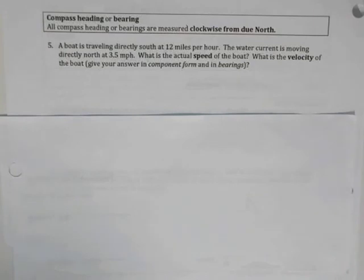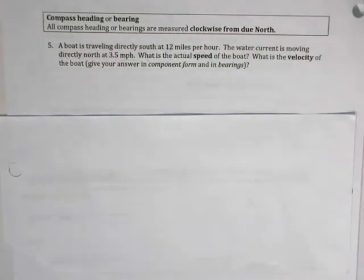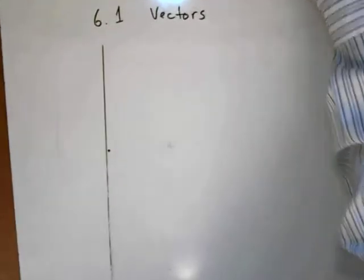The water current is moving directly north at 3.5 miles per hour. What is the actual speed of the boat — what is the velocity of the boat? Give your answer in component form and in bearings. For these types of problems we're going to have to draw a picture. We'll let b be the velocity of the boat and c be the velocity of the current.